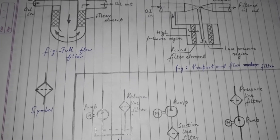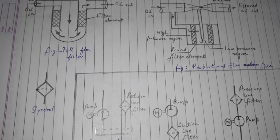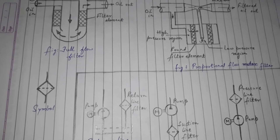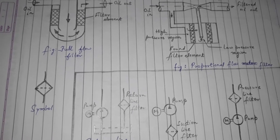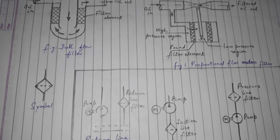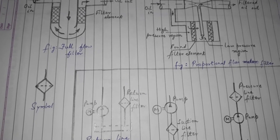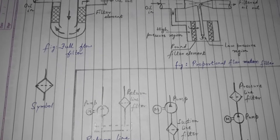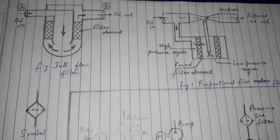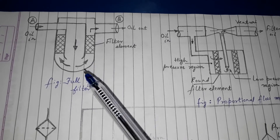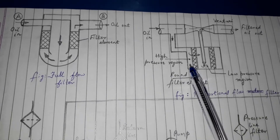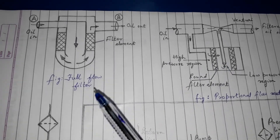Contaminants also include sludge, rubber chips, or particles from seals and hoses, which are carried by the flowing oil. If we do not use a filter, all these contaminants will flow everywhere with the oil and will block or jam the moving parts. Filters are classified as full flow filters and proportional flow filters.